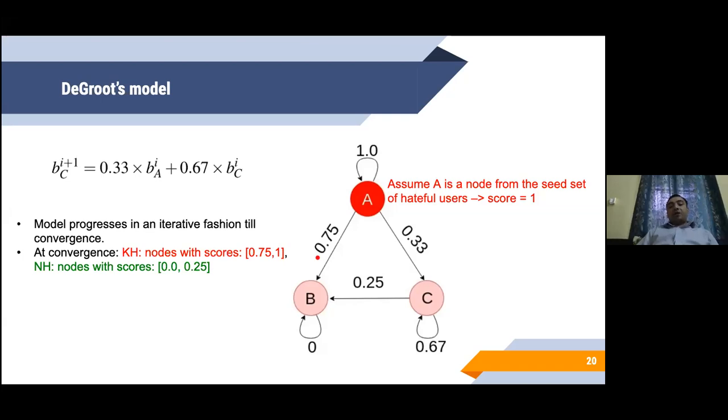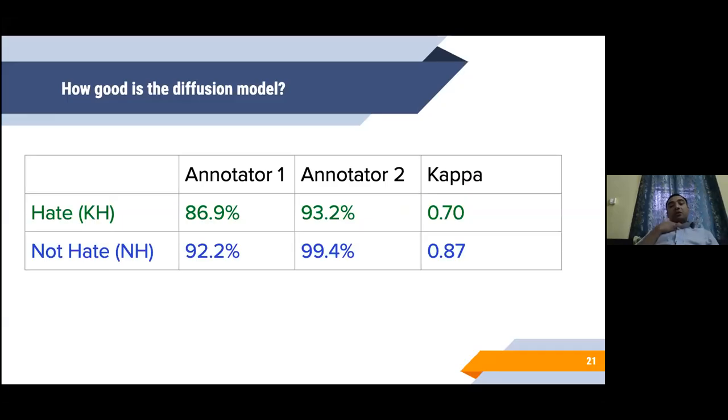If the score of the node is between 0.75 and 1, we call that node to be a hateful user. If the score is between 0.0 and 0.25, then we call the node to be non-hateful. There is a big gap, which is like a confusion gap, and we do not wish to comment on them. We only take cases which we are almost sure that they are either hateful or non-hateful.